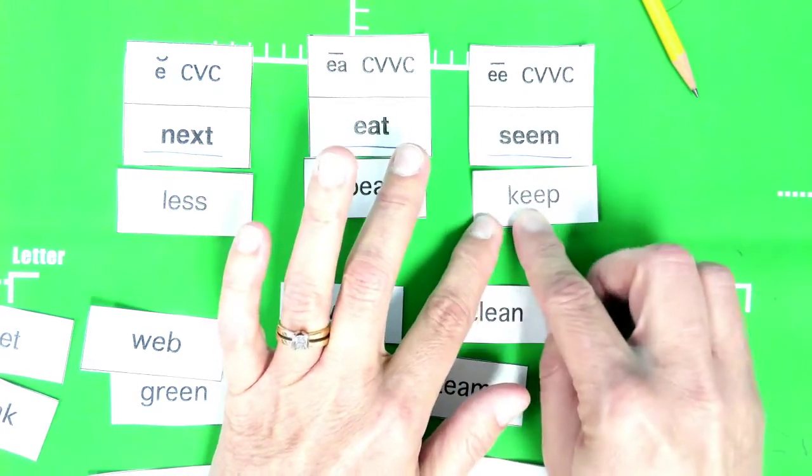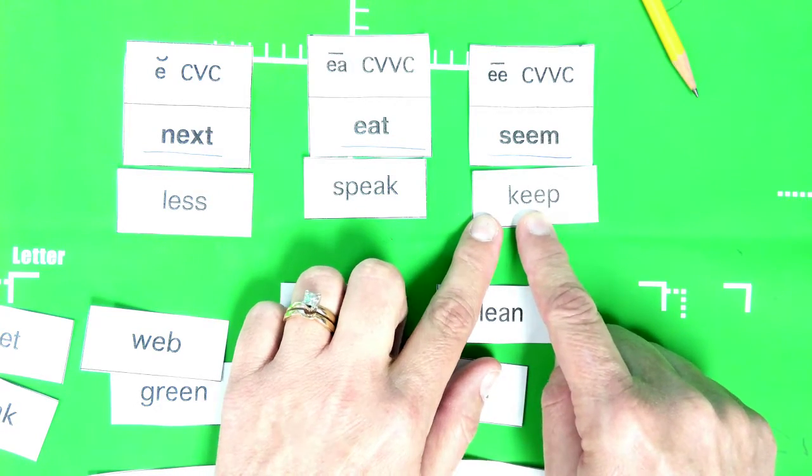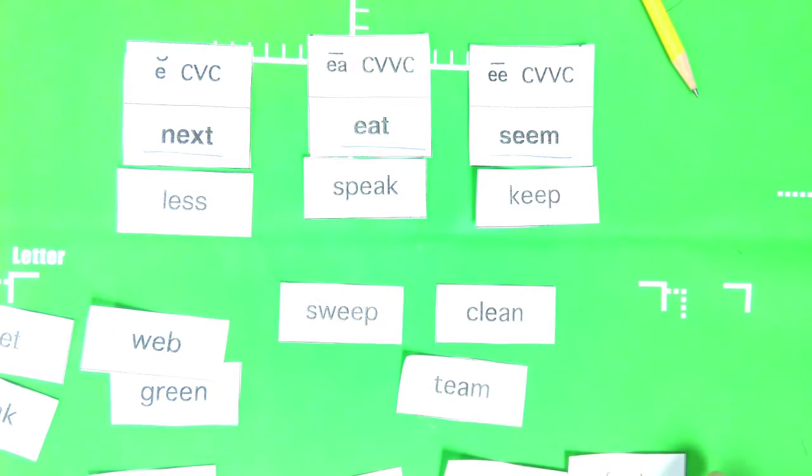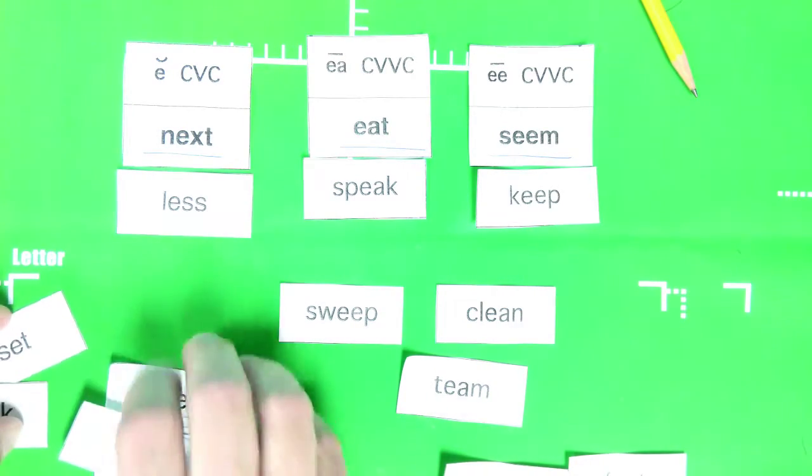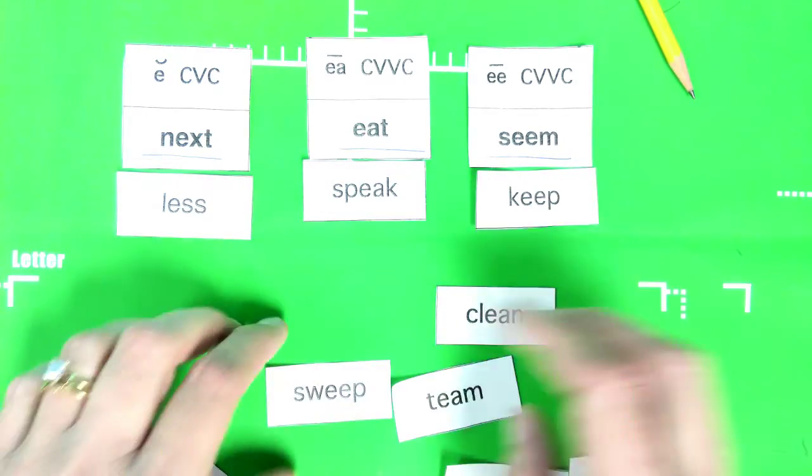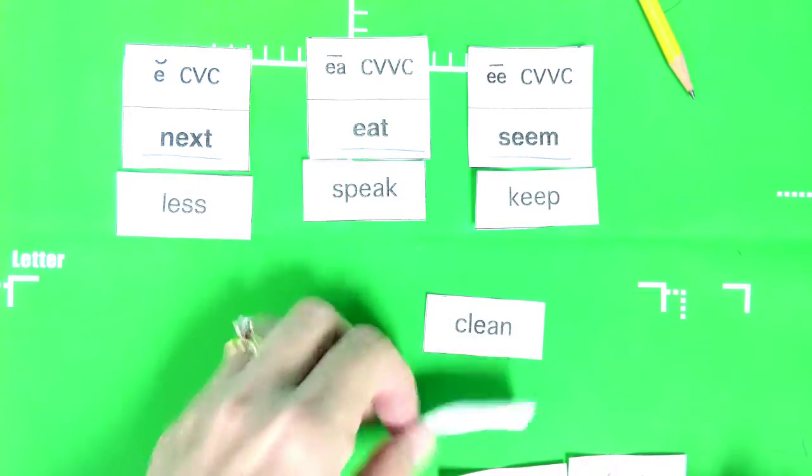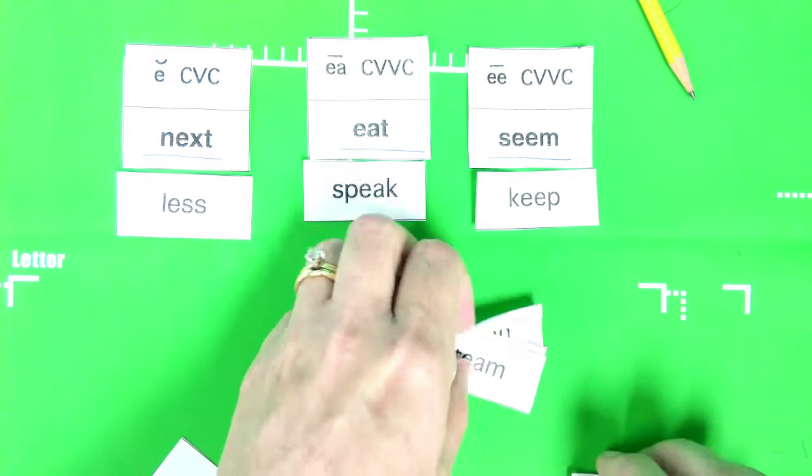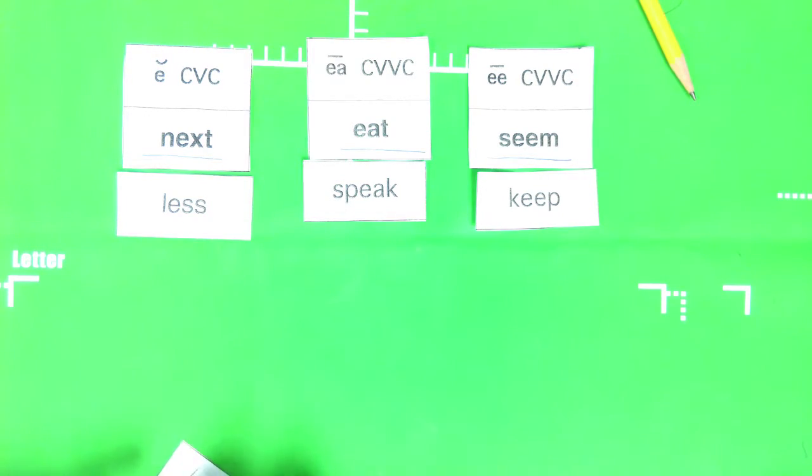So what I want you to do right now is I want you to sort the rest of your words. And when you're done, have someone check it for you, an adult or an older brother and sister or someone that can do that for you. And then I want you to write this sort down because you will get credit for that on your homework.